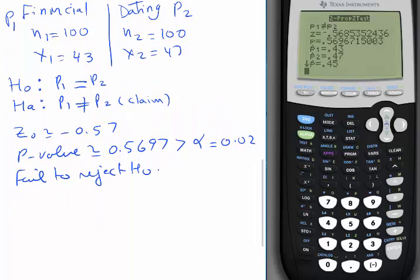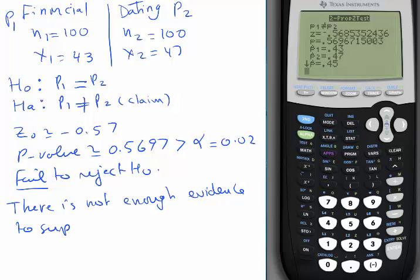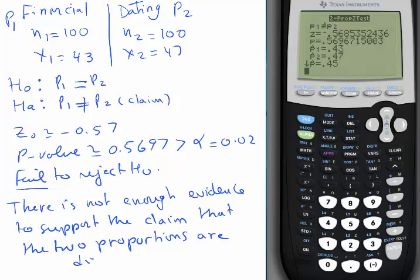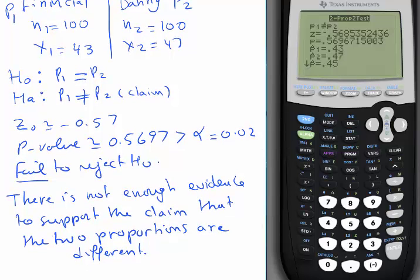Conclusion: if we fail to reject H0 and your claim is HA, you cannot support the claim. So every time you have the word fail, you have to start with that there is not enough evidence to support the claim, to support the claim that the two proportions are different. That concludes the problem.